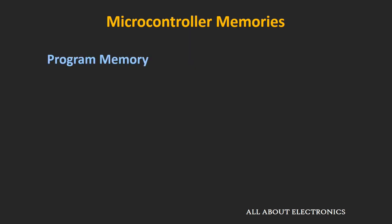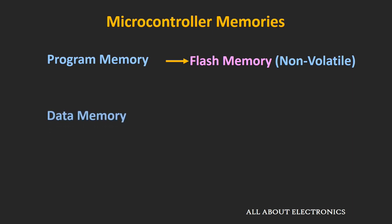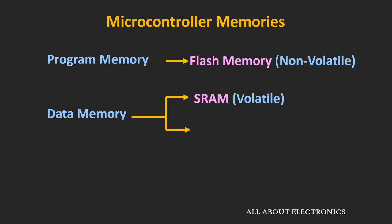In today's microcontrollers, the flash memory is used as a program memory. While as a data memory, two types of memories are used: SRAM and EEPROM. So now let's find out why this flash memory is used as a program memory and why the other memories are used as data memory.